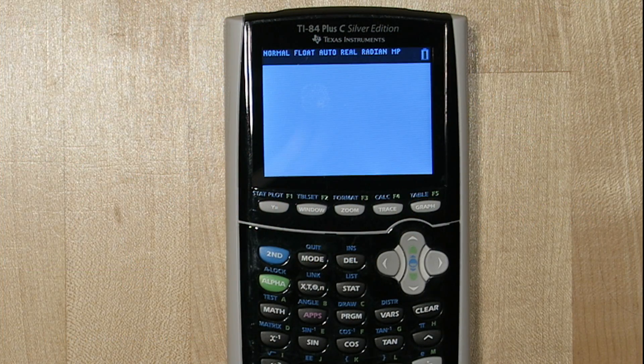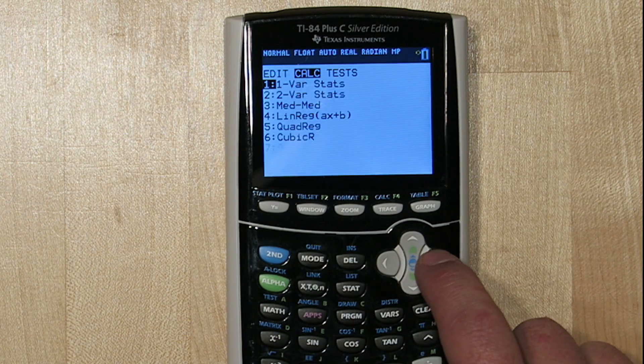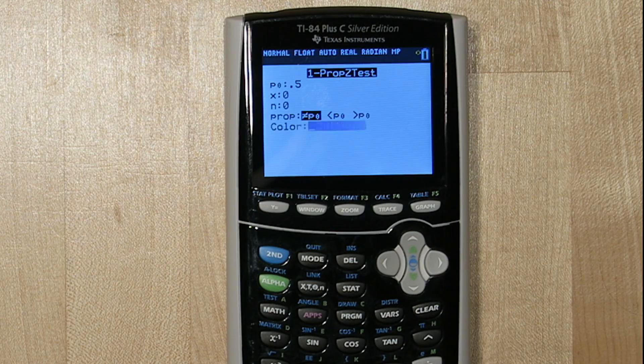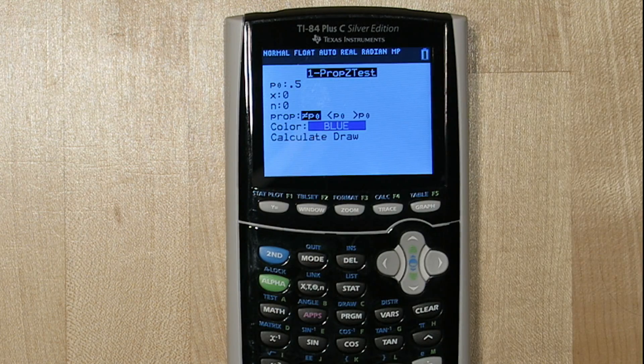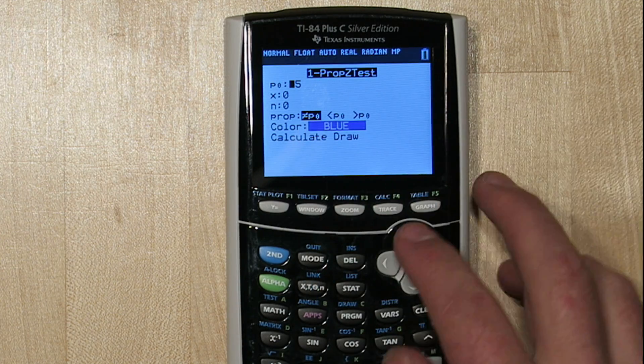Before we move on to Part B, let me show you another way to do the calculations. Start by pressing the STAT button, and go over to Test. Select 1PropZTest. Now up here, p-sub-0, that's going to be the proportion in our null hypothesis, so .5.